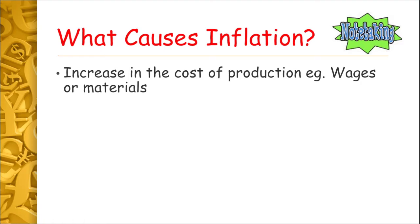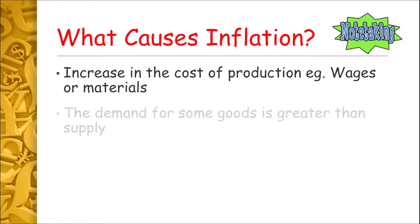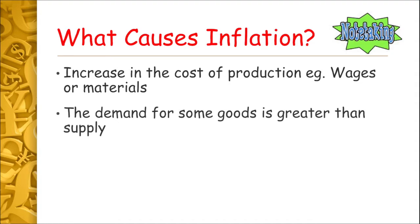So these are some of the things that cause inflation, though there are more than this. First, increasing the cost of production — the cost of actually making the good. If the cost of wages or raw materials increase, then there is inflation. Another reason could be that demand for some goods is greater than supply. If more people want to buy a particular product but there isn't enough of that good available, that may lead to an increase in price, causing inflation.